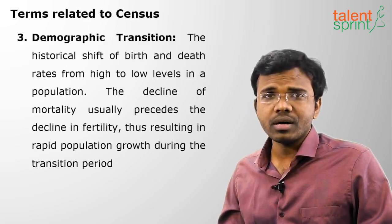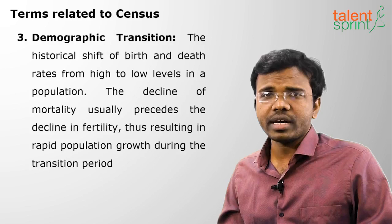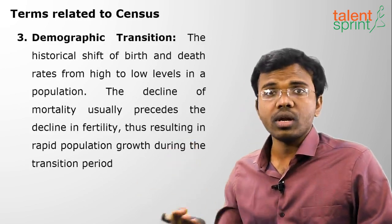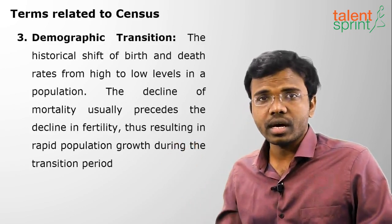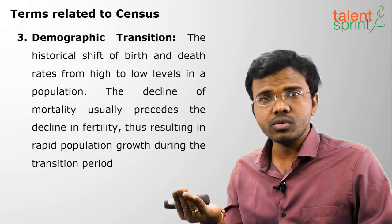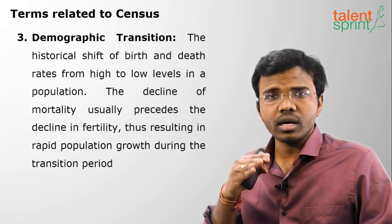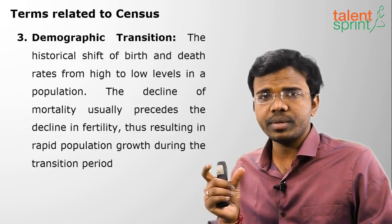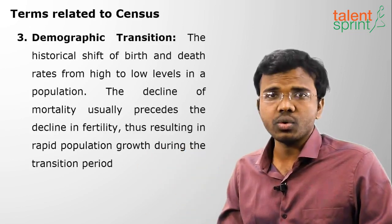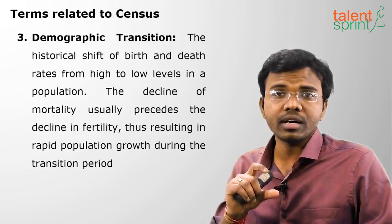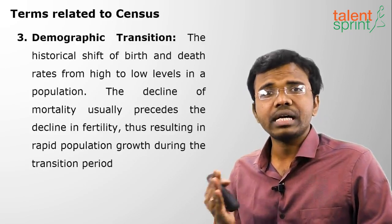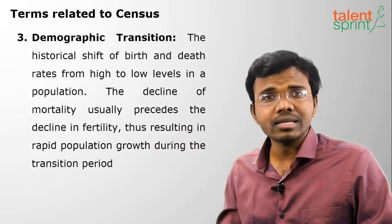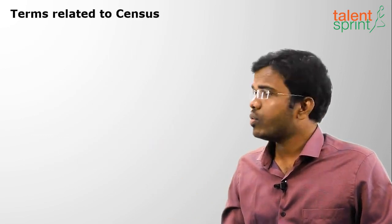The next term is demographic transition — the shift of birth and death rates from high to low levels. Earlier the birth rate was high, now it has shifted to a lower level, and death rate was also high, now it has shifted to a lower level. During this transition period there will be rapid population growth. Mortality will be low — fewer people dying — hence it is called demographic transition.